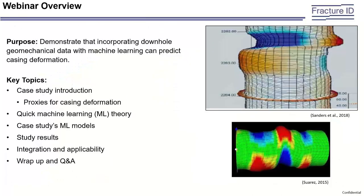Now that we have some of those inputs, I'll walk through this case study at a high level. We're going to look at the scenario that kicked off the study, the proxies we're using for casing deformation and why we need them, take a quick tangent on machine learning models without getting too deep into technical details, then look at the models we built, how they perform against real-world data, and how we integrated the results into the operator's workflow. Then I'll wrap up and open the floor to questions.